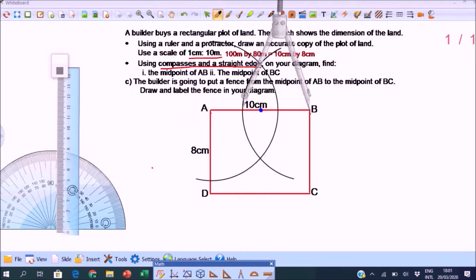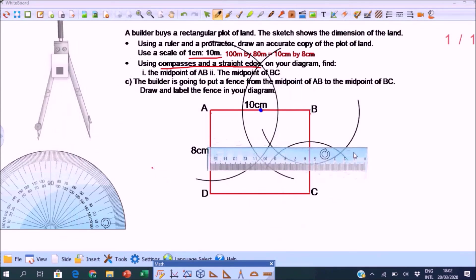Now midpoint of BC. Now needle on C. Make them intersect. Now use a straight edge. And mark the midpoint.